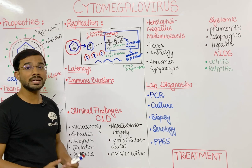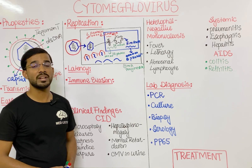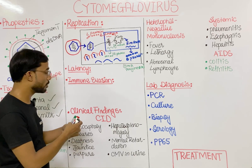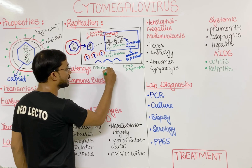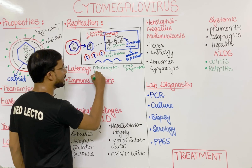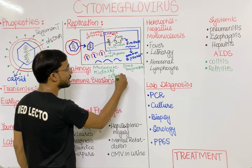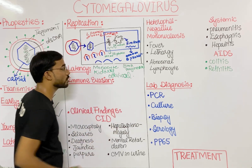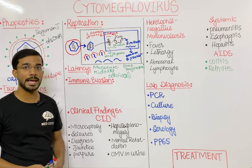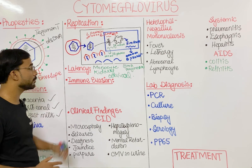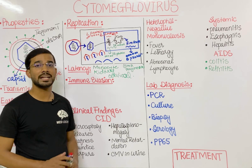Next, let's look at latency — in what types of cells cytomegalovirus shows latency. Most importantly, it shows latency in monocytes. It can also become latent in kidney cells or cervical cells. These are the most important things to remember about the latency of CMV.